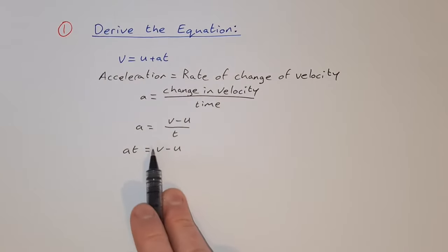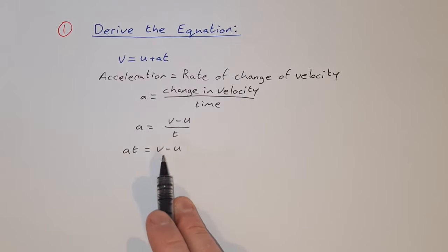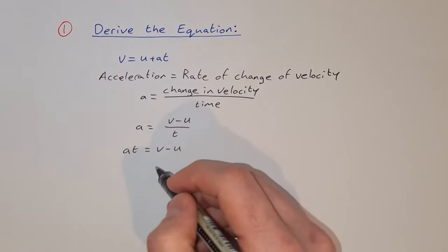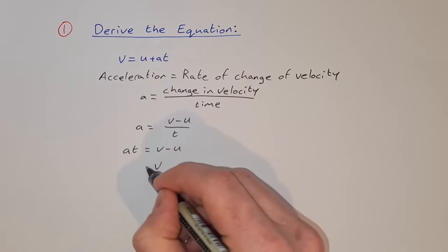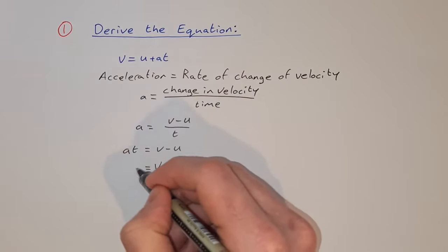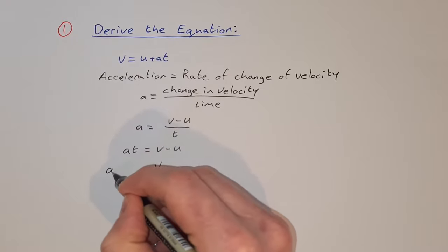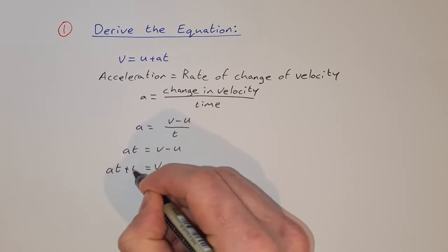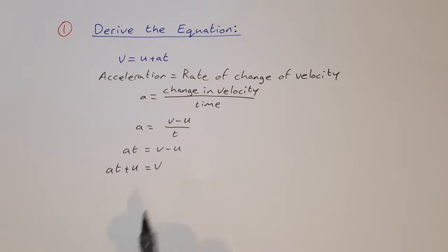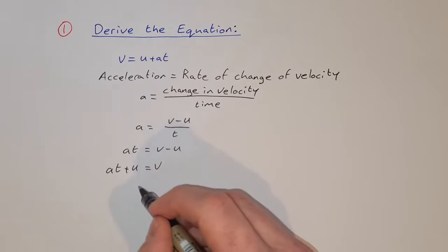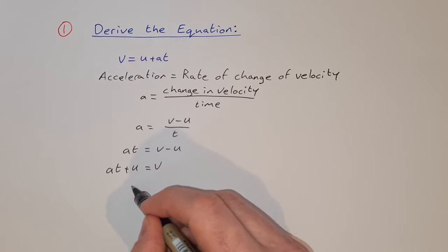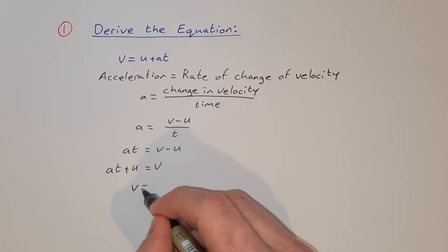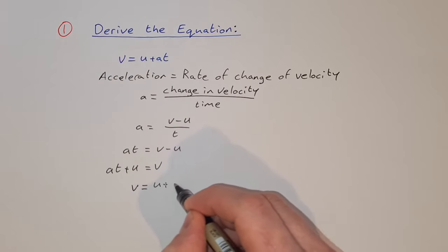Then we just rearrange this formula to get v on its own. So v = at + u. And then to get it into the form we were given to start, we just rearrange the sides: v = u + at.